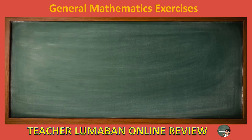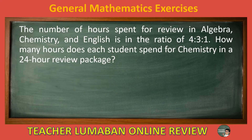The number of hours spent for review in algebra, chemistry, and English is in the ratio of 4:3:1. How many hours does each student spend for chemistry in a 24-hour review package?